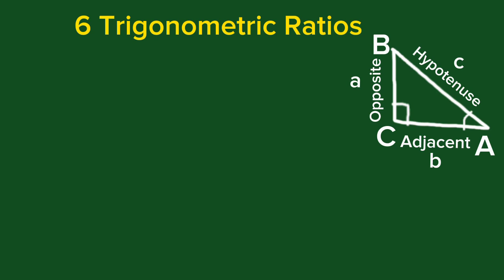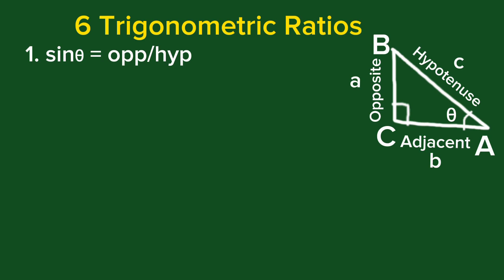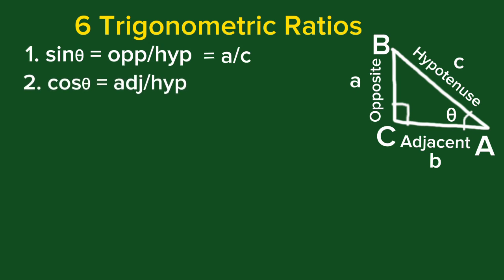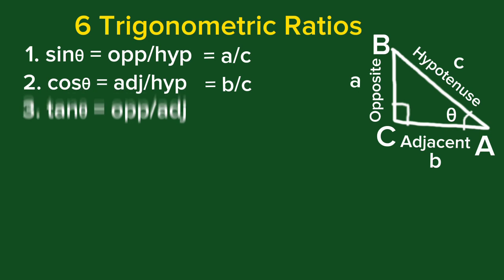We also denote angle A as theta. From this triangle we name the six trigonometric ratios. Number one: sine theta is opposite over hypotenuse, that is A over C. Number two: cosine theta is adjacent over hypotenuse, that is B over C. Number three: tangent theta is equal to opposite over adjacent, that is A over B.